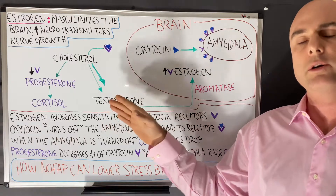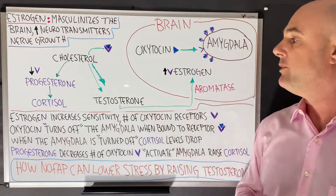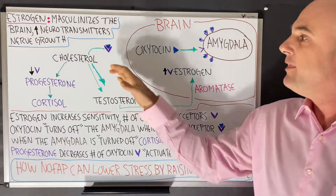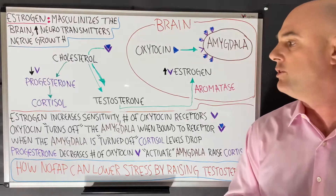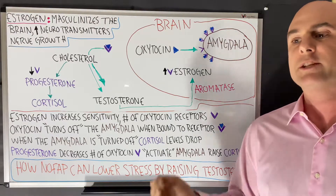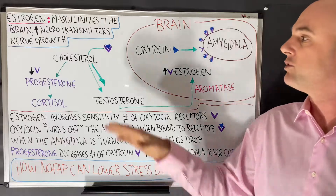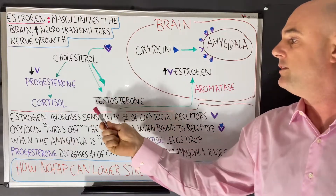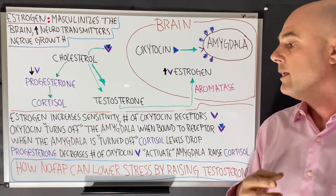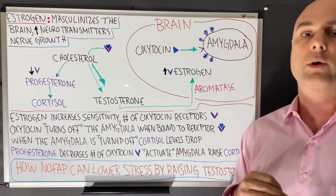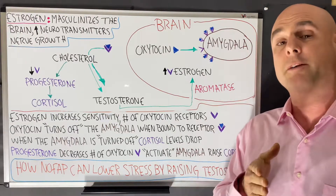So practicing nofap and raising testosterone levels is likely to lower our cortisol levels. When we raise testosterone and reduce cortisol, that allows more cholesterol to be converted to testosterone. Raising testosterone through nofap ultimately helps the body produce even more testosterone by lowering cortisol, freeing up more cholesterol to be directed down the testosterone synthesis pathway. That is one way nofap can help reduce stress — by shutting off the amygdala and turning off cortisol production.